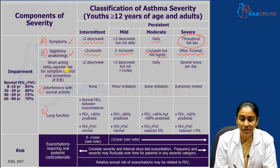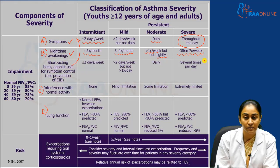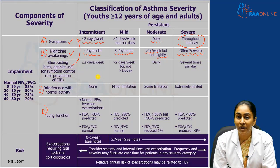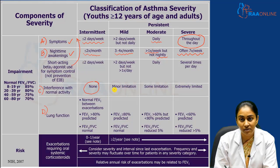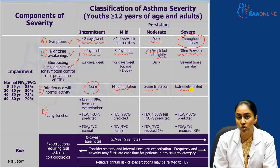Short-acting beta agonist use largely mirrors the symptom frequency, so if you remember the symptom classification it is essentially the same. Regarding interference with normal activity: in intermittent asthma there is no interference; mild persistent causes minor limitation; moderate persistent causes some limitation; and severe persistent causes significant limitation of day-to-day activities.